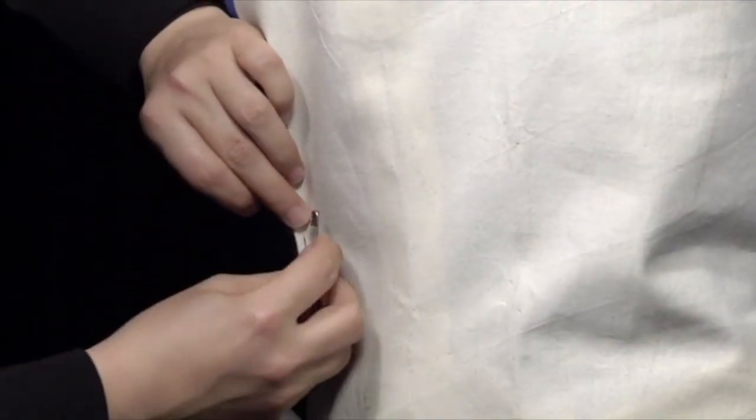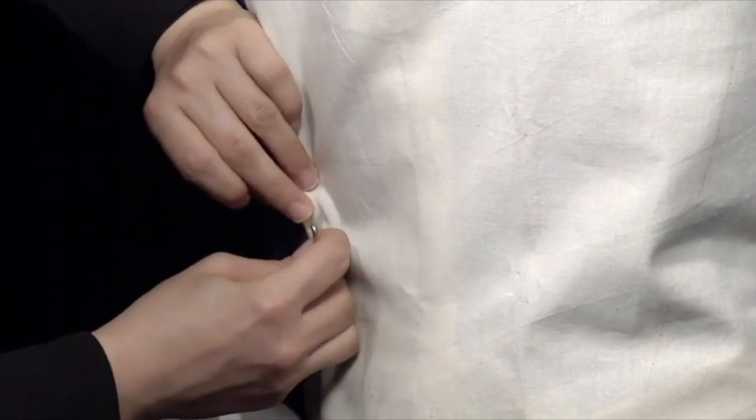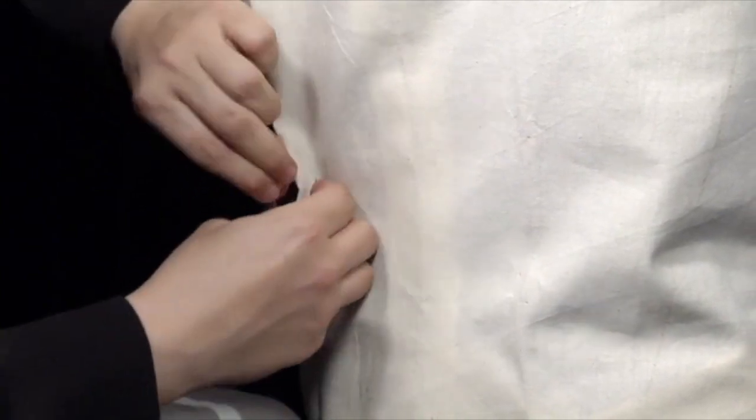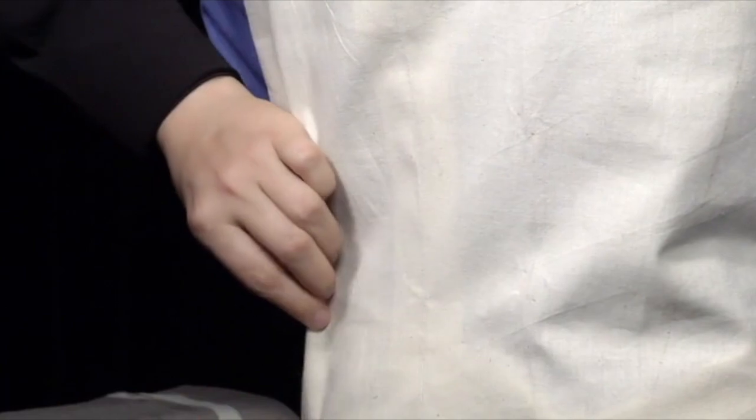To make a dart, pin the excess fabric on either side of the vest. Try to stay equidistant from center back and don't bring your dart any higher than the arms eye.